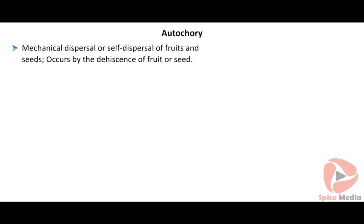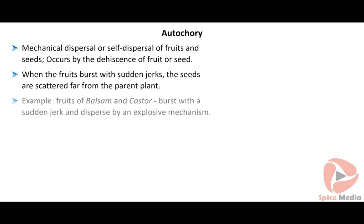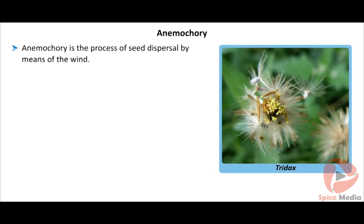Autochory is the mechanical or self-dispersal of fruits and seeds. It occurs by the dehiscence of fruit or seed; when fruits burst with sudden jerks, the seeds are scattered far from the parent plant. For example, fruits of balsam and castor burst with a sudden jerk and disperse seeds by an explosive mechanism.